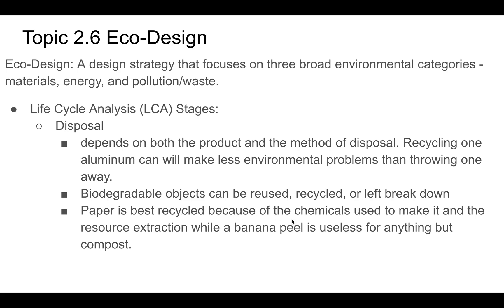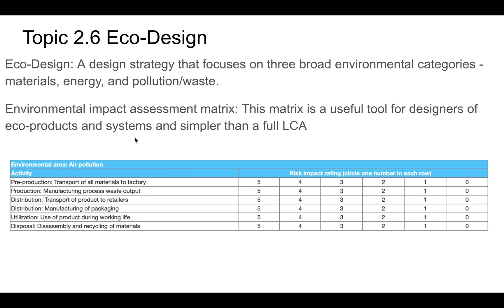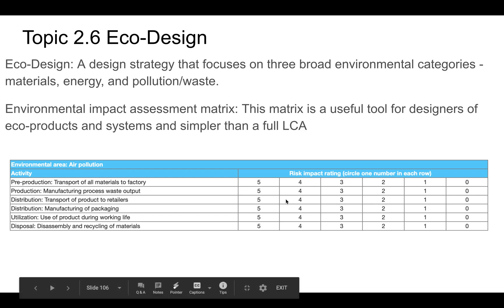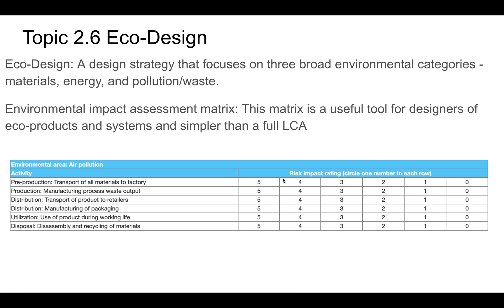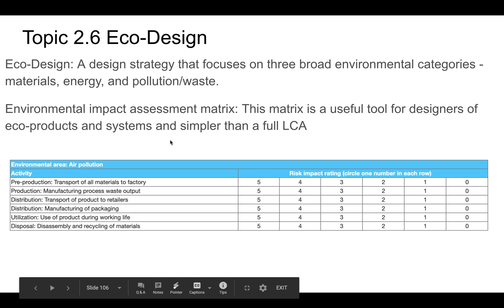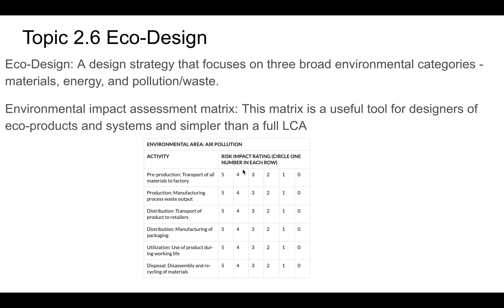Another way to test environmental impact is the environmental impact assessment matrix. You rate things on a scale where typically a higher number means less impact — so a large impact gets a zero and a very low impact gets a five. At the end, the highest total score indicates the most environmentally friendly option. The matrix goes through the different life cycle areas, and you circle numbers in each row.